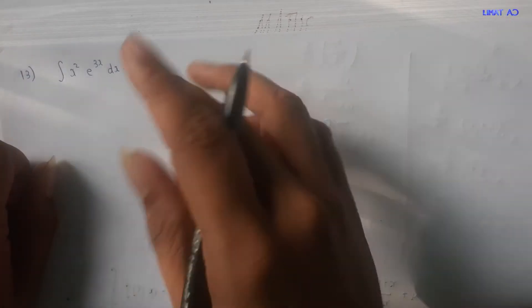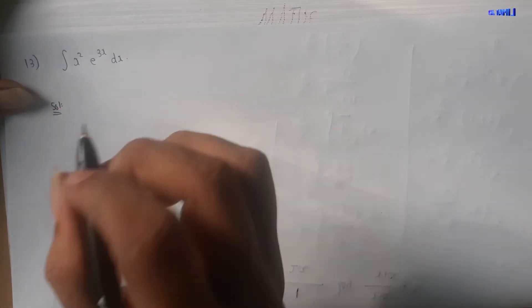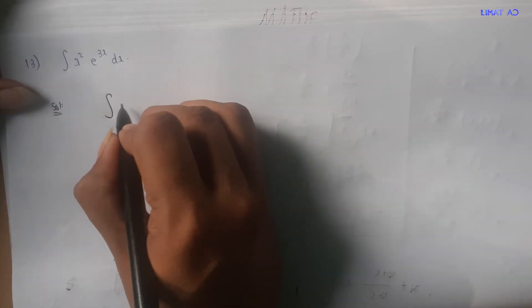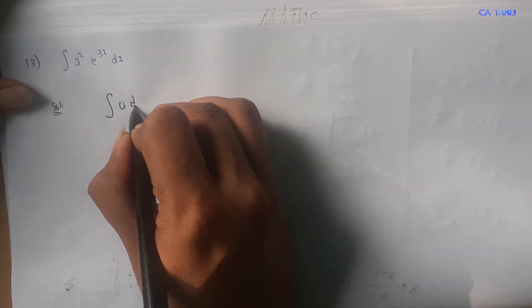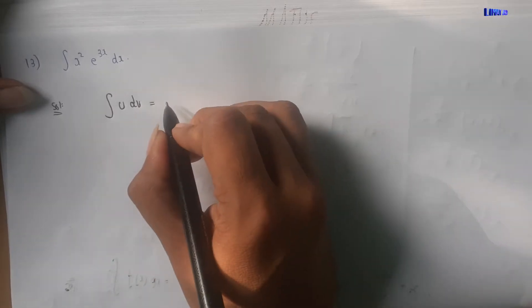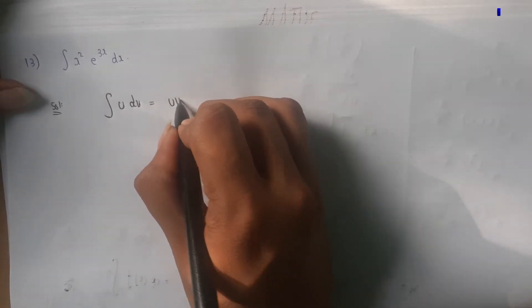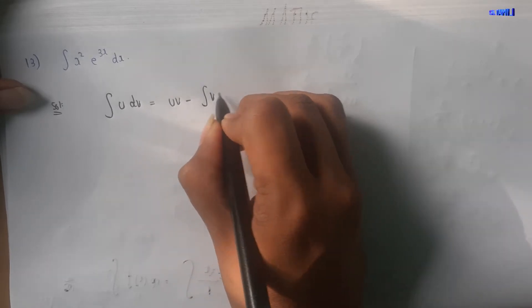The method we use is the UV method, also called the UDV method. The formula is: integral of u dv equals UV minus integral of v du. This is what we use to solve all these problems.